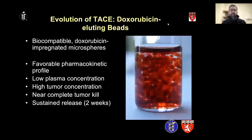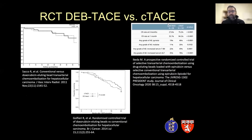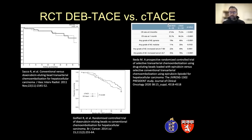Drug-eluting bead TACE was introduced around 2007–2008 because of its favorable pharmacokinetic profile — low plasma concentration and higher tumor concentration of chemotherapy. However, multiple randomized studies have shown no benefit of DEB-TACE compared to conventional TACE. Two randomized trials showed no difference in overall survival. There was some benefit in complete response rate at one and three months for conventional TACE, but DEB-TACE was better tolerated with fewer adverse events. Overall: no difference in survival, but if you're concerned about patient tolerance, DEB-TACE is reasonable.